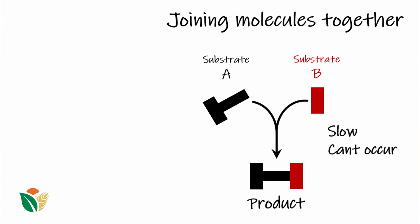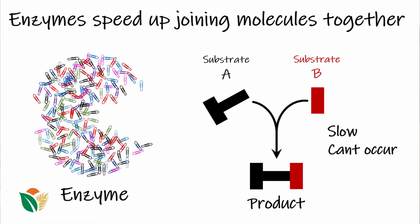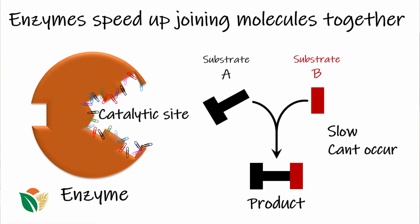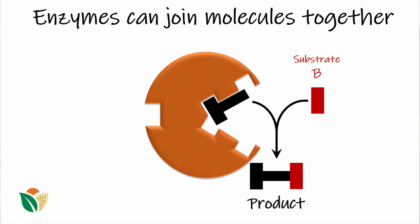We have an enzyme which is made up of all these different amino acid side chains, which determines the form and the function of the enzyme. Here we have the catalytic site where the reaction joining substrates A and B to make the product occurs. The catalytic site is determined by all these different amino acids, which line it and determine what it can and cannot bind. The enzyme can bind these substrates within its catalytic pocket, undergo a reaction, and then release the product.